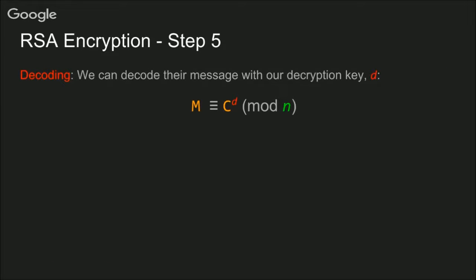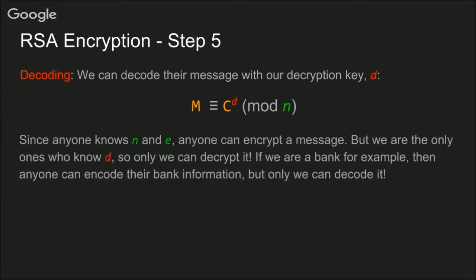Now we can decode the message they just sent us using our decryption key. So if we take C to the D and reduce that mod N, by some amazing feat of mathematics, we get the original message M back. Now since anyone knows what N and E are, anyone can encrypt a message. But we're the only ones to know D, so only we can decrypt it. Bank, for example, then anyone can encode their bank information, but only we can decode it. If someone just knows C, they can't find M without knowing D, and that's the key to RSA encryption.